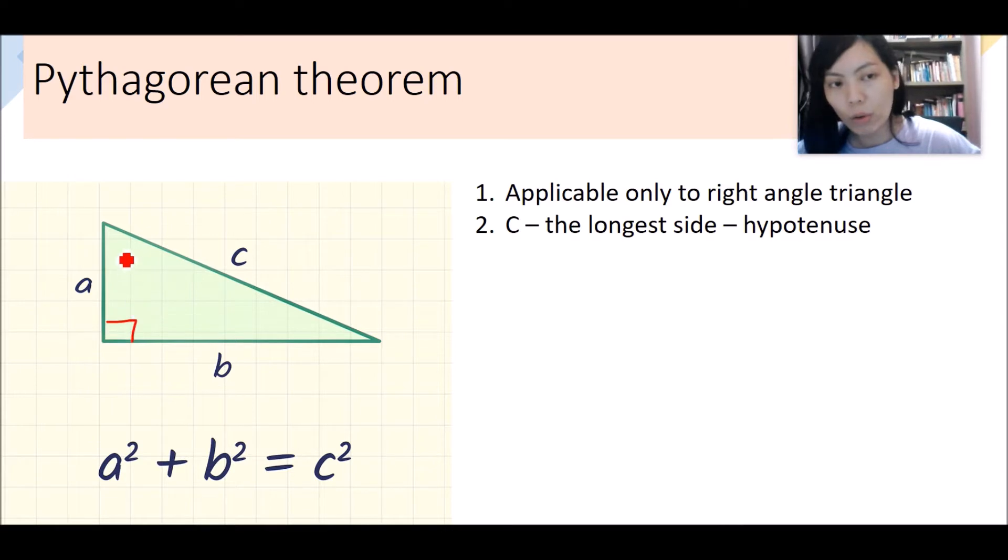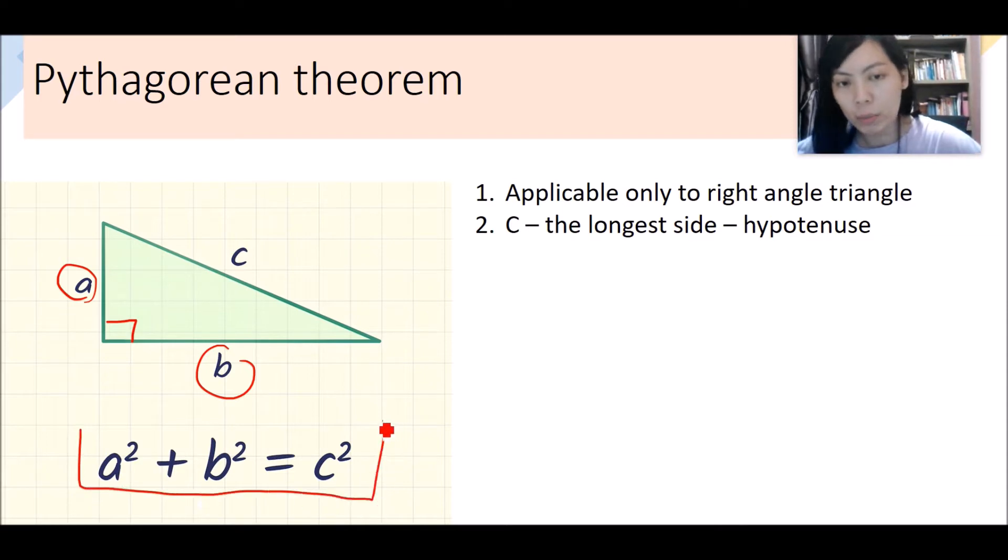And for any right-angled triangle, there is always a formula to find the length of any of the sides if the length of any two other sides is given. And therefore, we have this mathematics law, Pythagorean theorem, known as a squared plus b squared equals c squared.